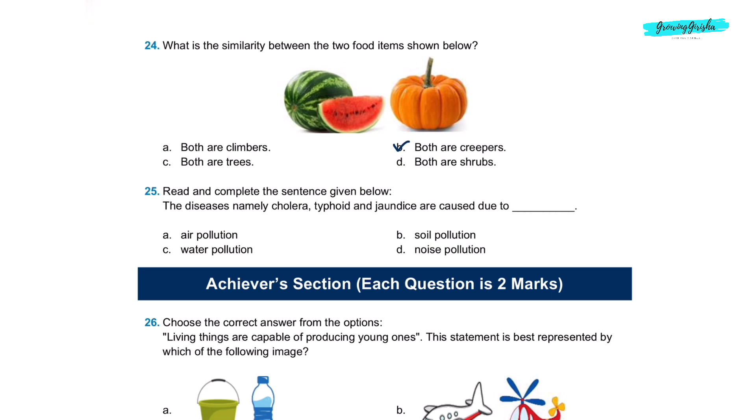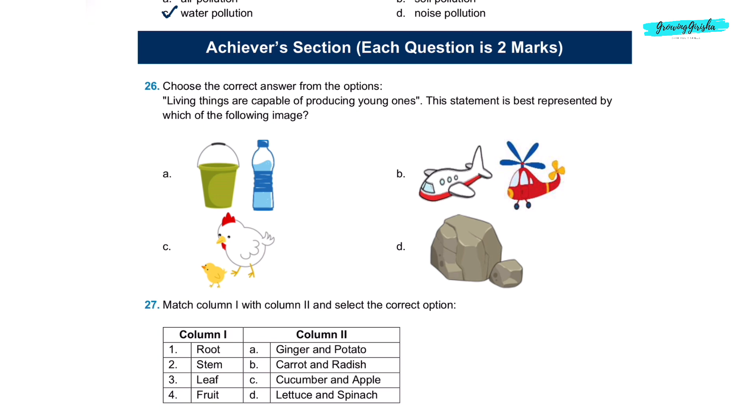Question 25. Read and complete the sentence given below. The diseases namely, cholera, typhoid and jaundice are caused due to option C, water pollution. Question 26. Choose the correct answer from the options. Living things are capable of producing young ones. This statement is best represented by which of the following image? Option C.